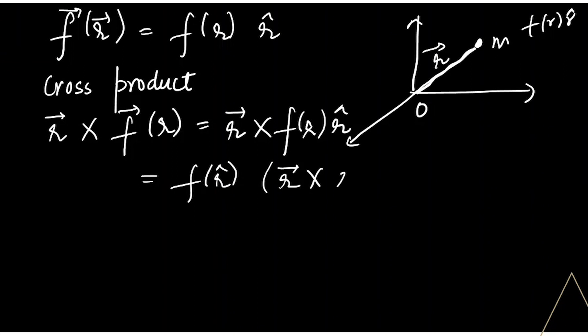This R cross R cap will be zero because theta will be zero, sine zero is zero. So we get this condition: R cross F(R) is zero.